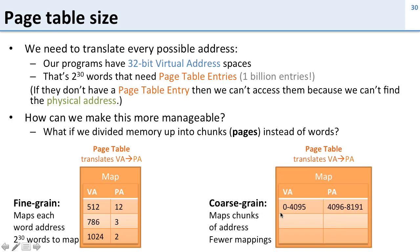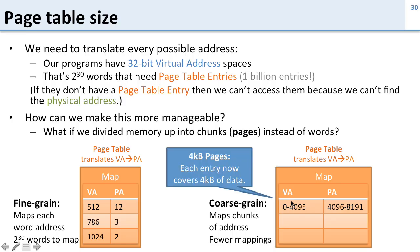Here's what this looks like with coarse-grained pages. We have a whole page, so virtual addresses 0 through 4095 are going to map to physical addresses 4096 to 8191. Now instead of having one entry in our page table map one word, one entry maps this whole chunk of memory — we call this chunk a page. So in this case we have four kilobyte pages. Each entry in our page table now handles four kilobytes of data, versus four bytes before. Each chunk is now 1,024 times larger, so we need 1,000th as many entries, making our page table much smaller.